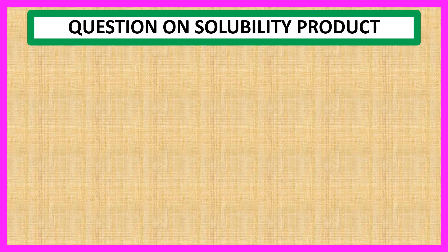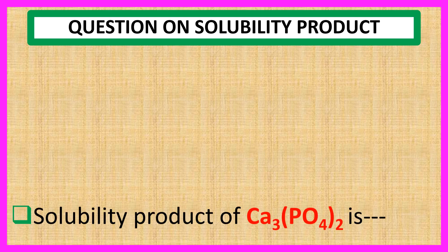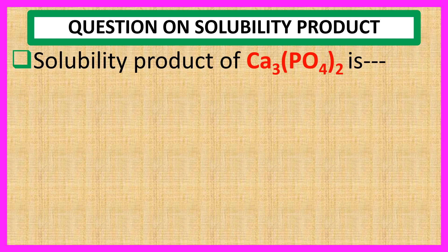Welcome, everyone. Question on solubility product. The solubility product of Ca₃(PO₄)₂ is — choices are: a. 108 S to the power 5,